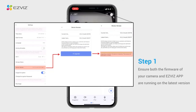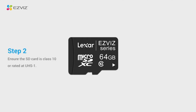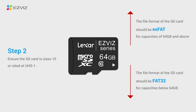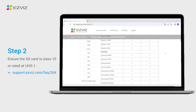Ensure both the firmware of your camera and ESVIZ app are running on the latest version. Ensure the SD card is Class 10 or rated at UHS-1. The file format of the SD card should be FAT32 for capacities below 64GB and exFAT for capacities of 64GB and above. We do recommend you check the compatible list on our website.